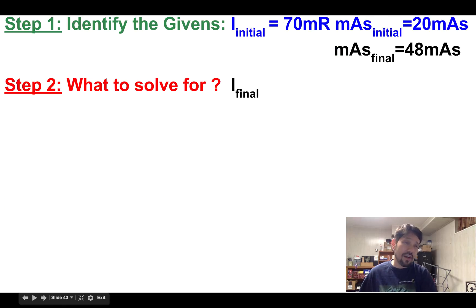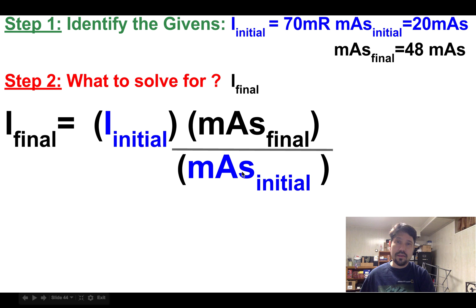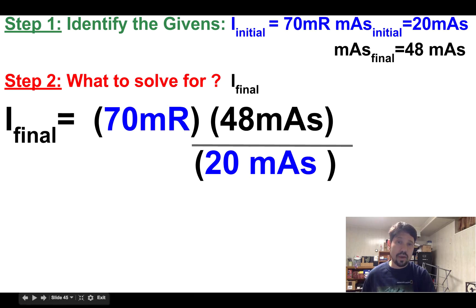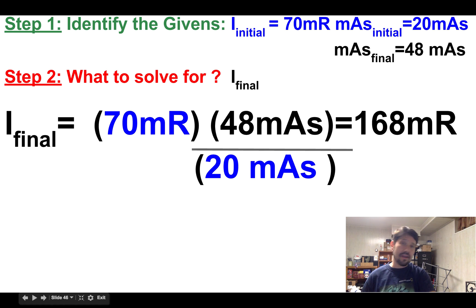Now I'm solving for I-final, and I just plug in. What was my initial intensity? It was 70. What was my final mAs? 48. What was my initial mAs? 20. And I drop that in. 70 times the ratio of my masses. And that's how I get 168 mR. Pretty heavy dose.